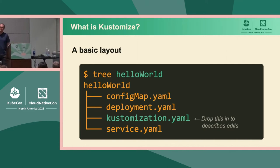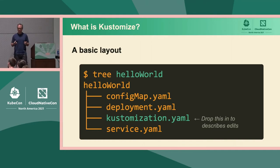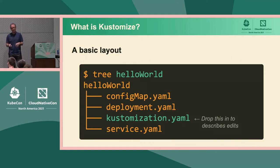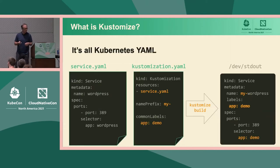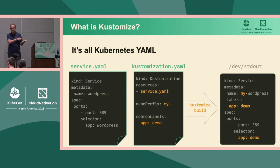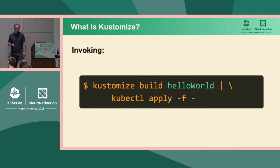This is an example of a layout for a very simple Kustomize situation where you've got three normal Kubernetes files and you want to make edits to them. You can edit them with vi or Emacs, or you can drop a customization file in there to describe the edits you'd like to perform. The customization file says: add a name prefix, add some labels — apply it to service.yaml so that the file on the left comes out on standard out looking like the file on the right. You invoke this by writing `kustomize build` and then the path to the folder that has a customization file in it.